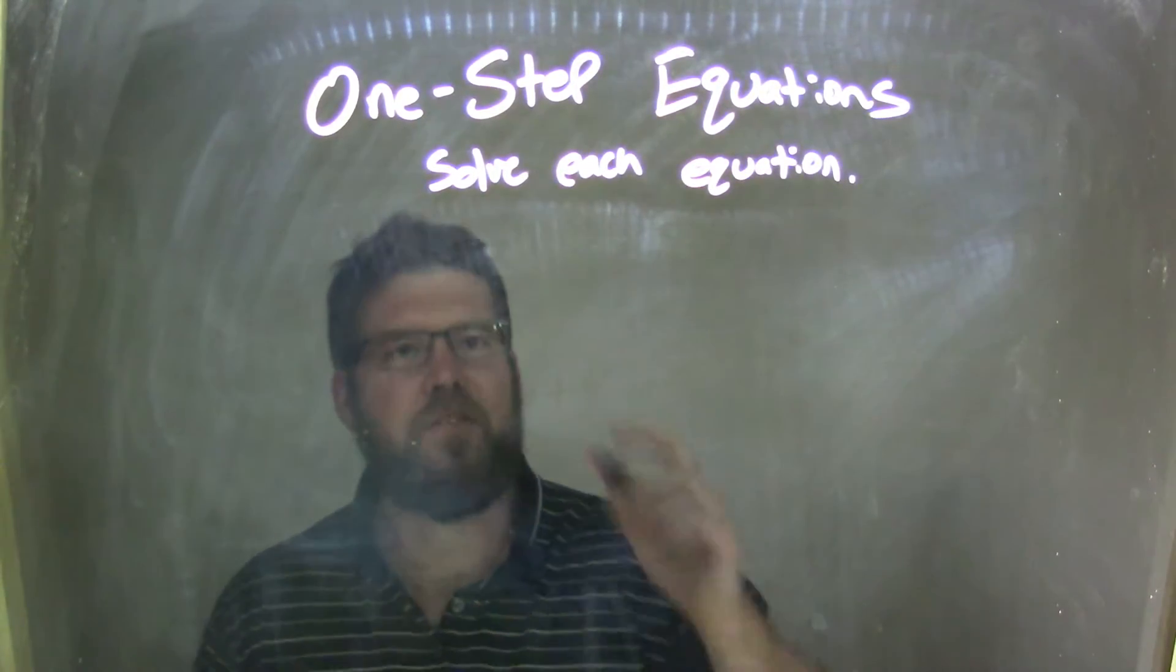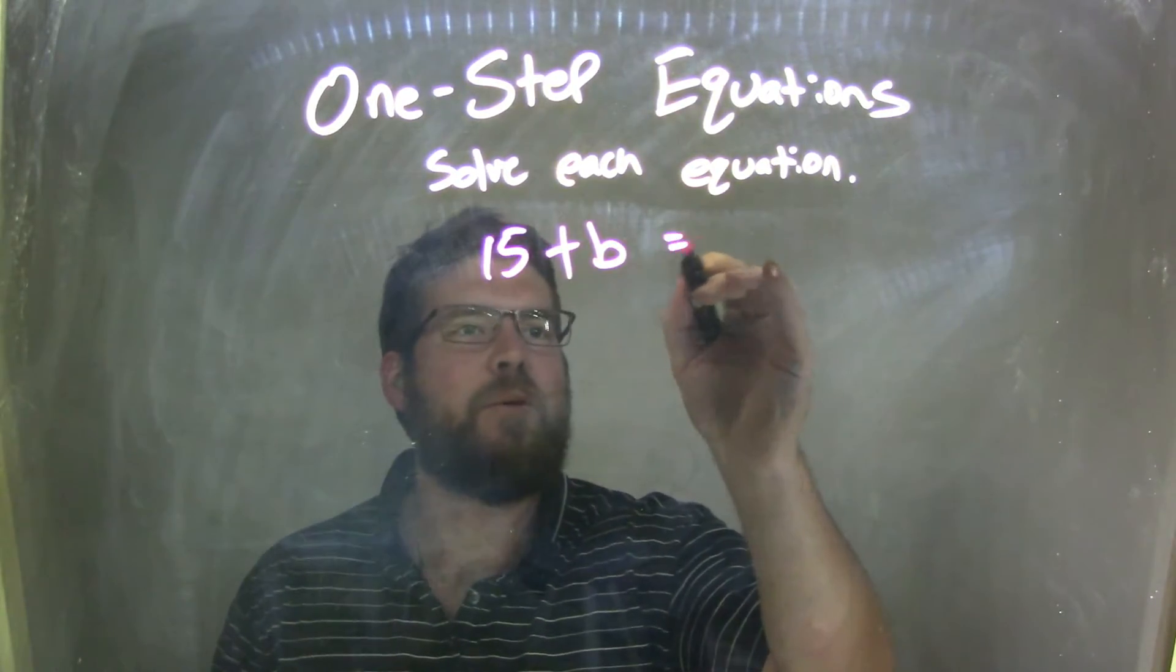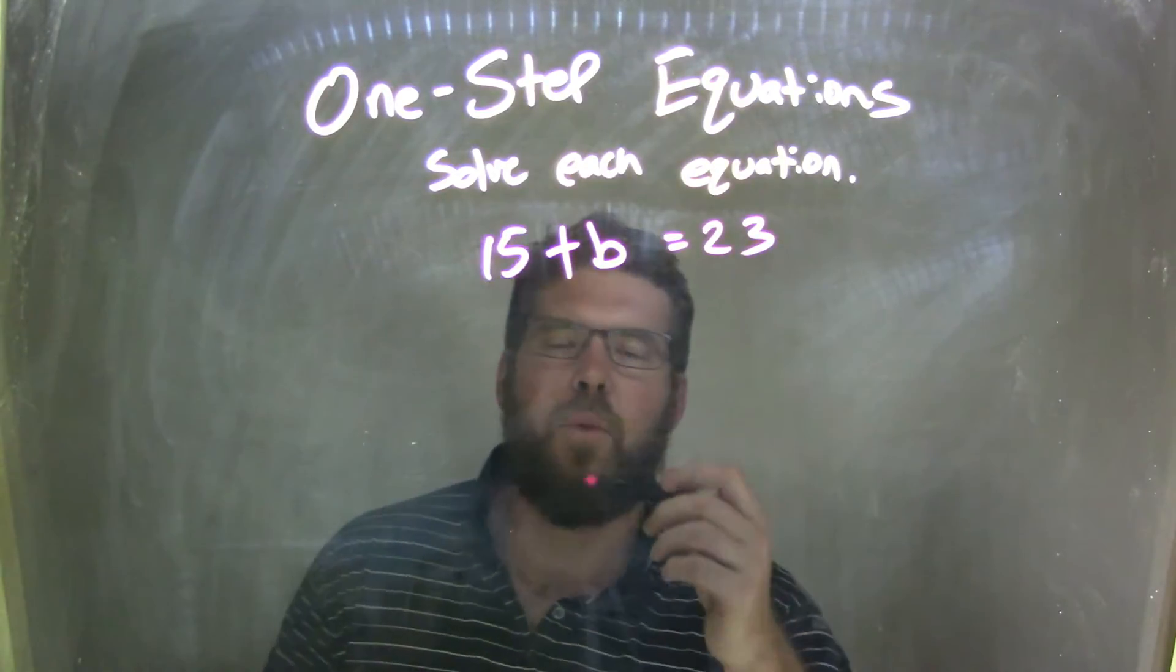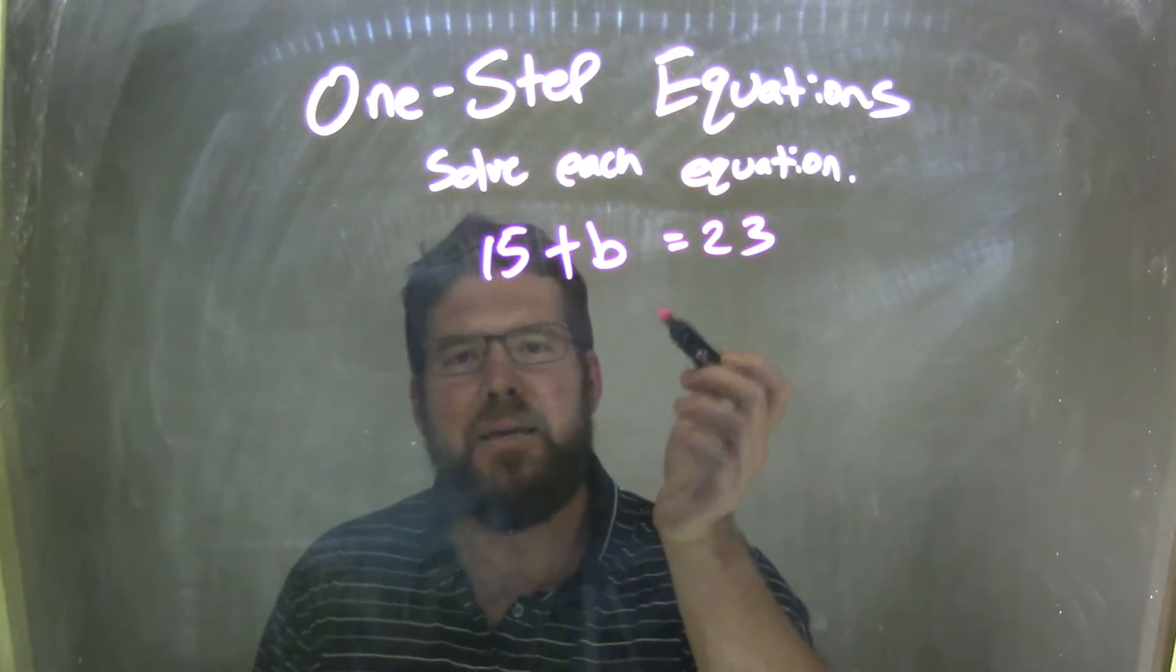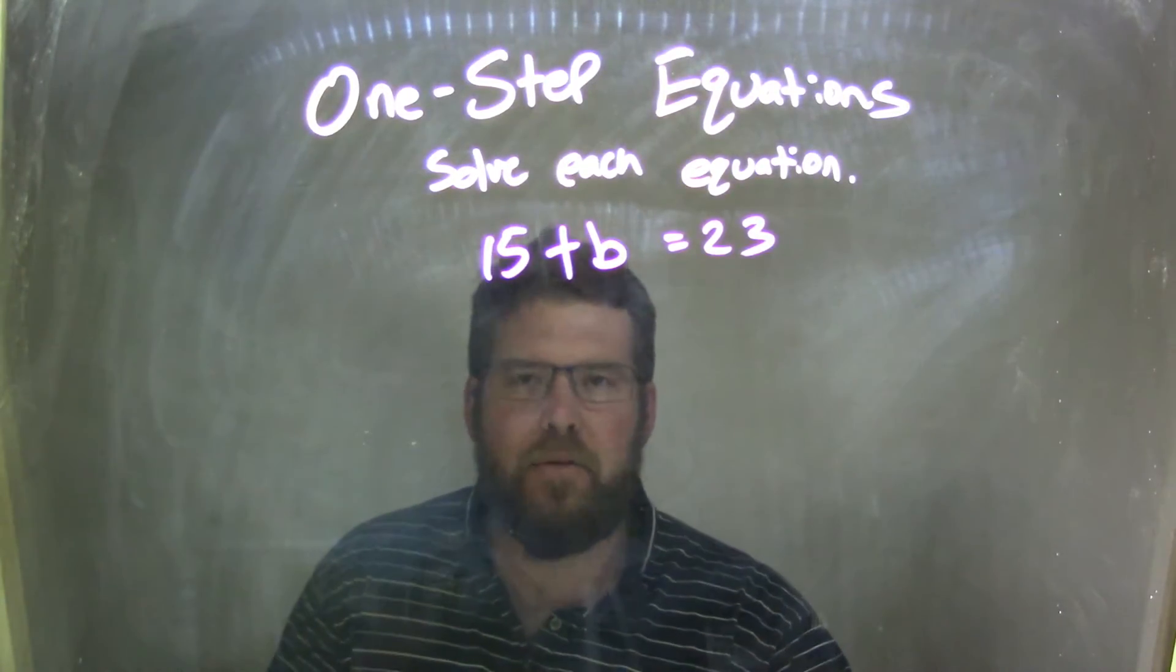So if I was given this equation, 15 plus b equals 23. I have 15 plus b equals 23 and I need to get the letter b by itself. To do that I need to bring the 15 over to the right hand side. How do I do that?